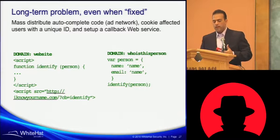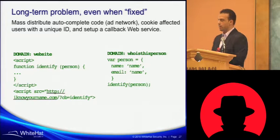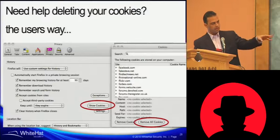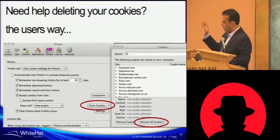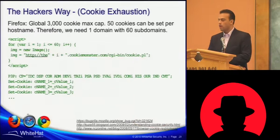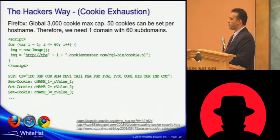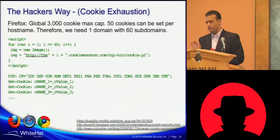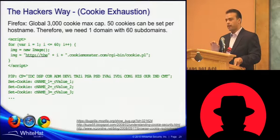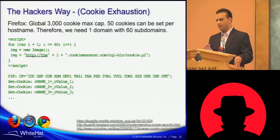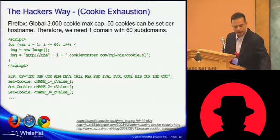We can ask people to delete their cookies as a privacy mechanism. The regular user way to get rid of cookies depends on the browser — you just do the show cookies option, select all the cookies and delete them. I wanted a better way, a hacker's way. All the browsers have this particular problem. In Firefox specifically there is a global cookie cap — you can only store 3,000 cookies in the browser at any given time. You go to 3,001, an older cookie is deleted off the stack. So you want to find some way to set 3,000 cookies really, really fast.